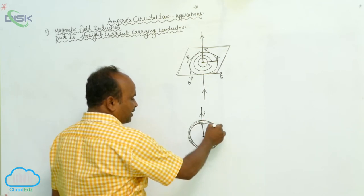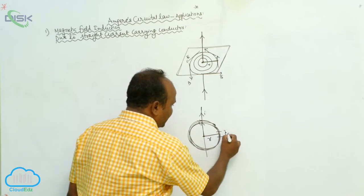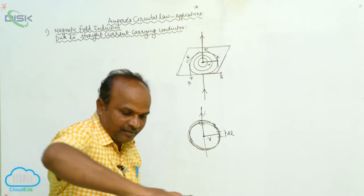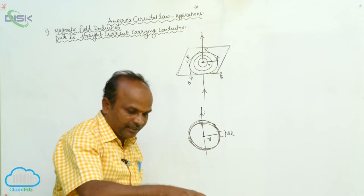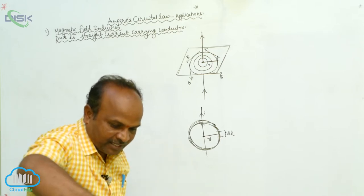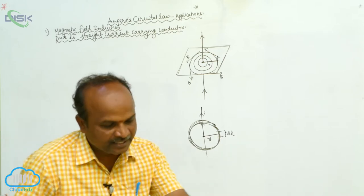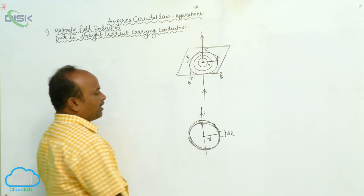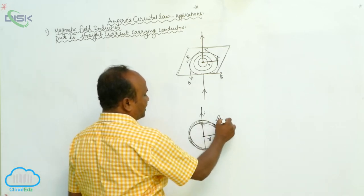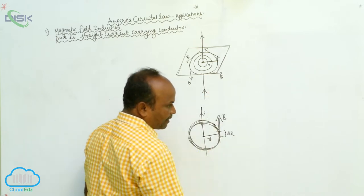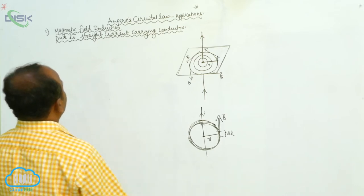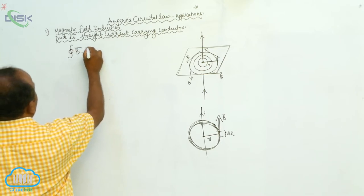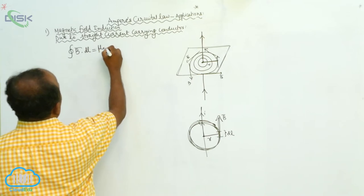This is a closed path. There is a length element dL. Whenever you consider the length element dL, the magnetic field induction is also in the same direction. Therefore, along the length element, the magnetic field induction is parallel to dL. The mathematical statement is: the closed line integral of B̄·dL̄ equals μ₀I.